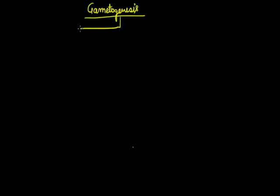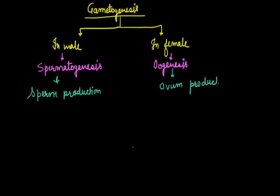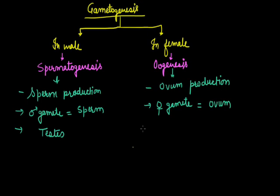Gametogenesis: a gamete is the haploid cell that is produced in the reproductive organ of male and female. In male, gamete production is done in testis and this phenomenon is called spermatogenesis. While in female, this is done in ovary and known as oogenesis. It is sperm production while this is ovum production. This is done in testis while this is done in ovary.